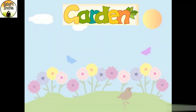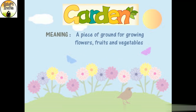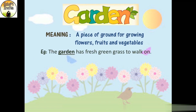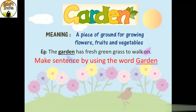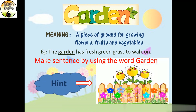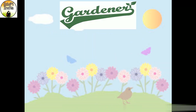The next word is 'garden.' A garden is a piece of ground for growing flowers, fruits and vegetables. For example, the garden has fresh green grass to walk on. Now tell me students, will you be able to make a sentence using this word 'garden'?